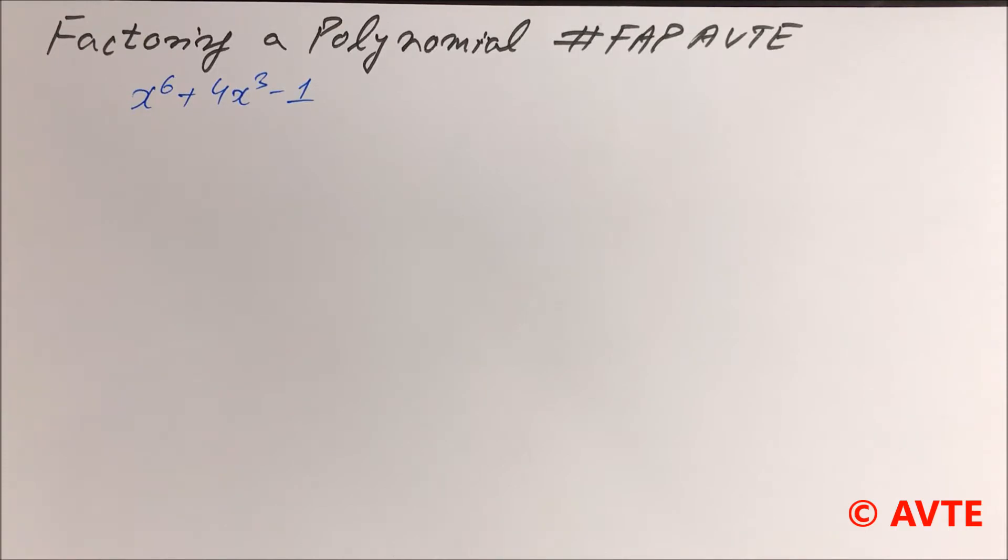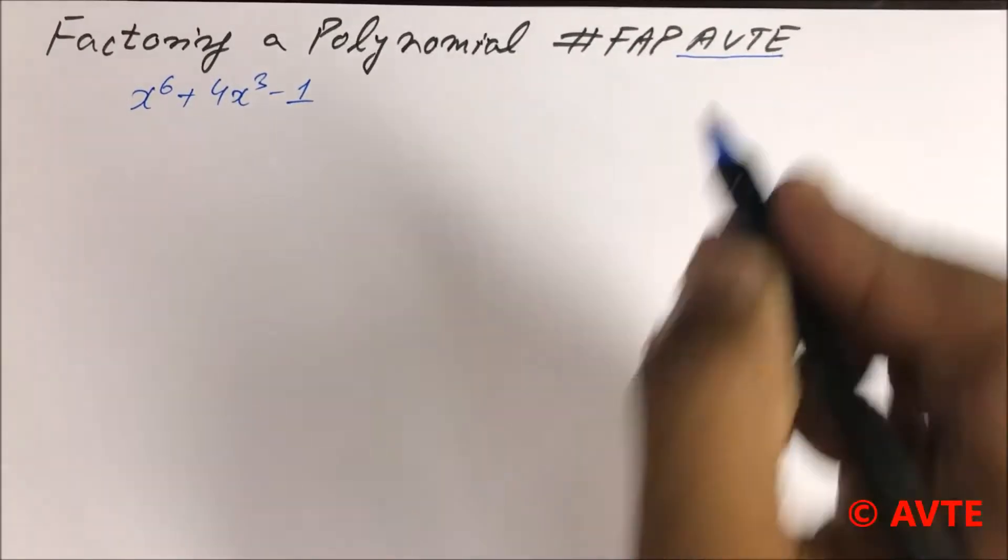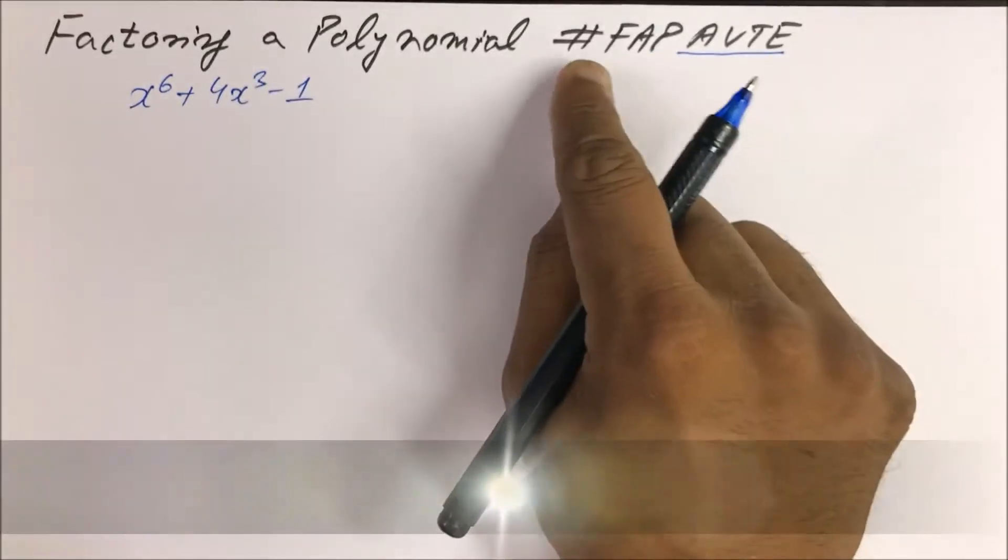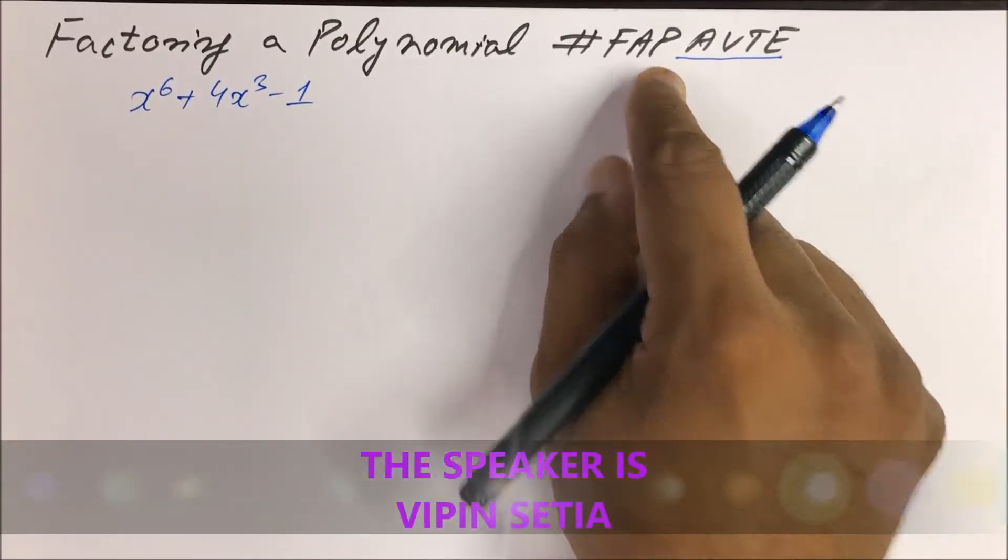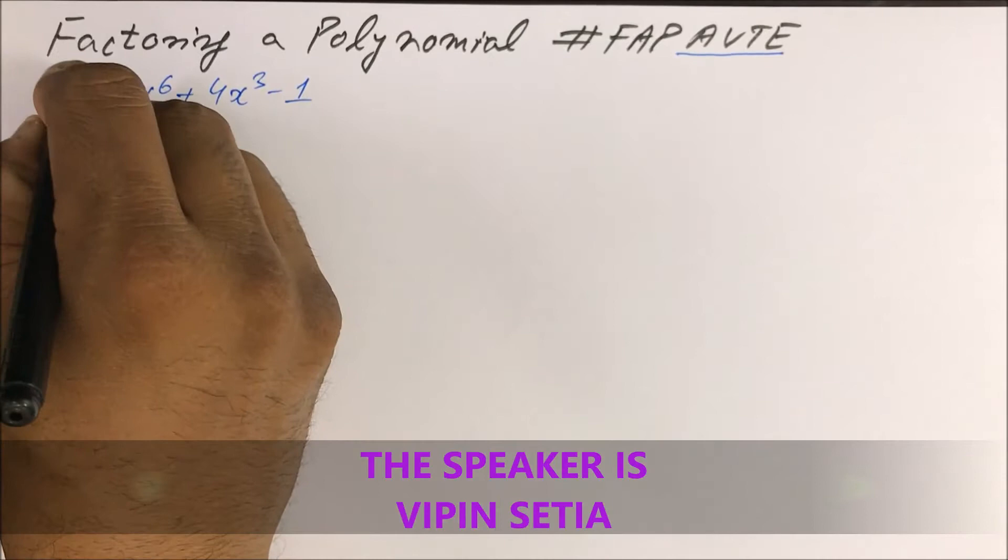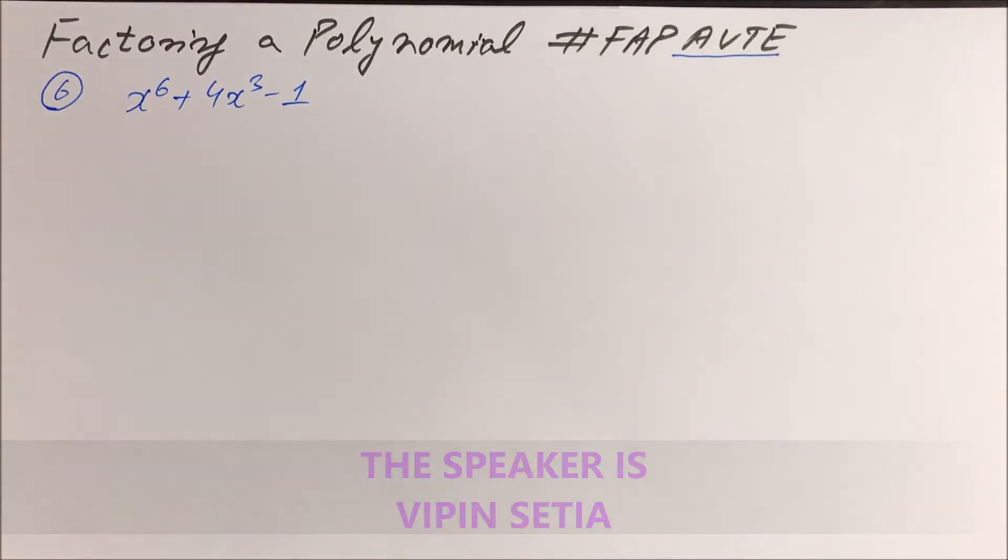Hello friends, welcome to the series Factoring a Polynomial in the channel AVTE. Hashtag FAP, this is question number 6: x to the power 6 plus 4x cube minus 1.